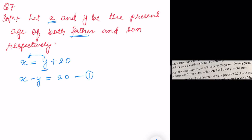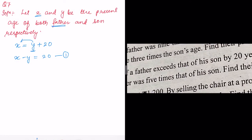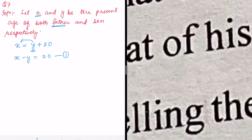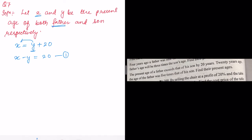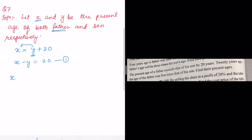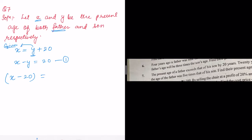Next, 20 years ago the age of the father was five times that of his son. So 20 years ago the father's age will be x minus 20. This is equal to five times the son's age 20 years ago, which is y minus 20.